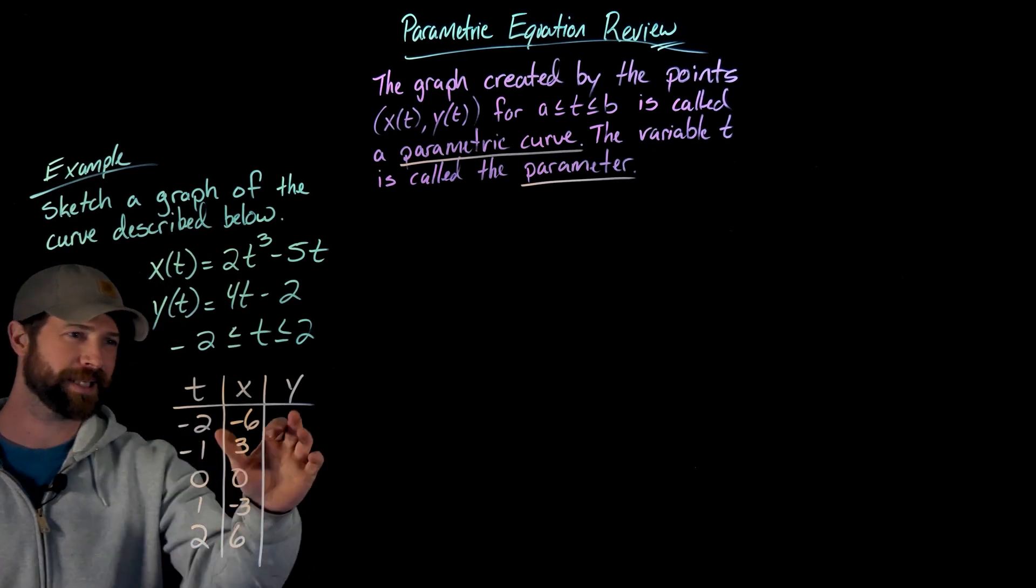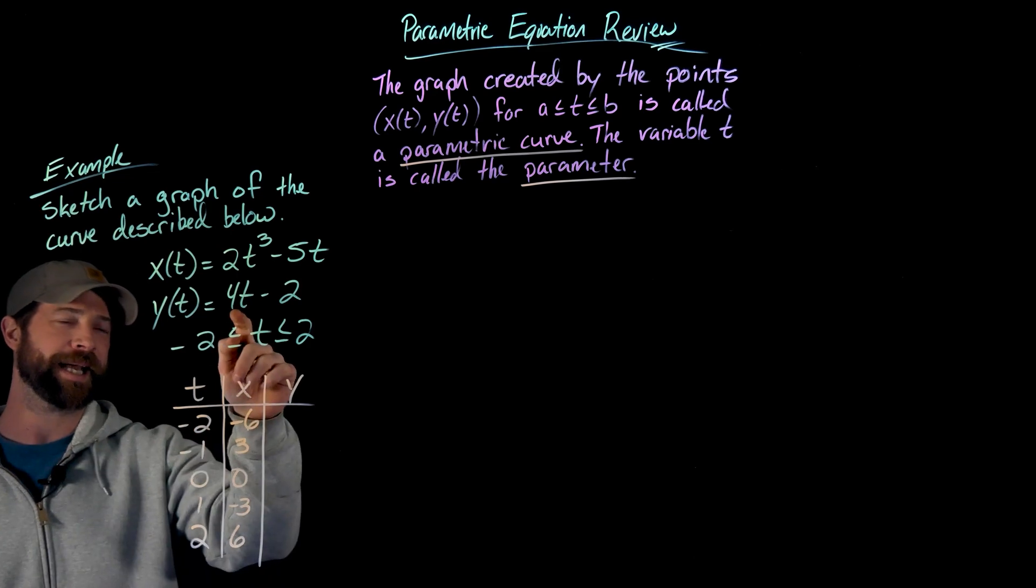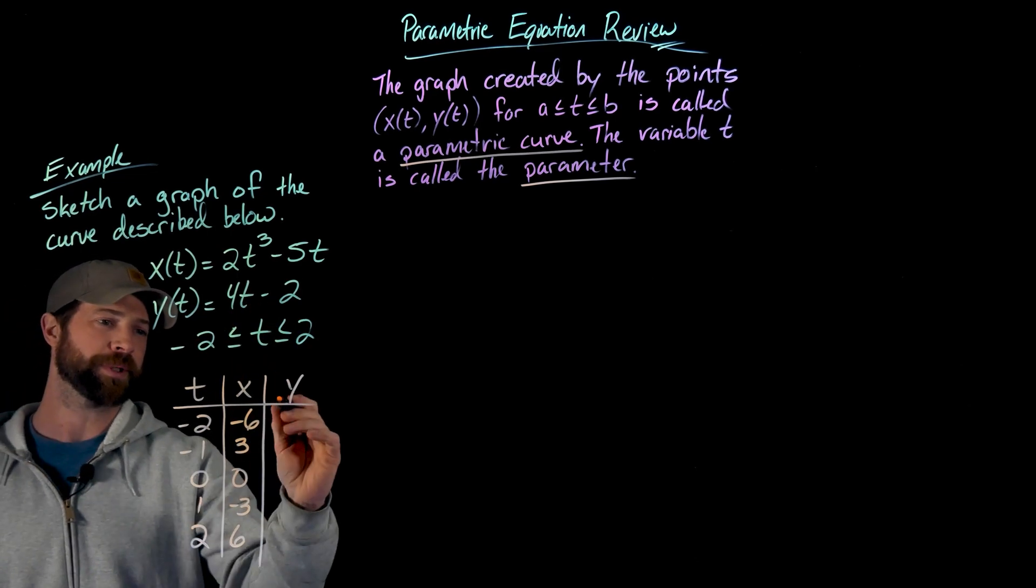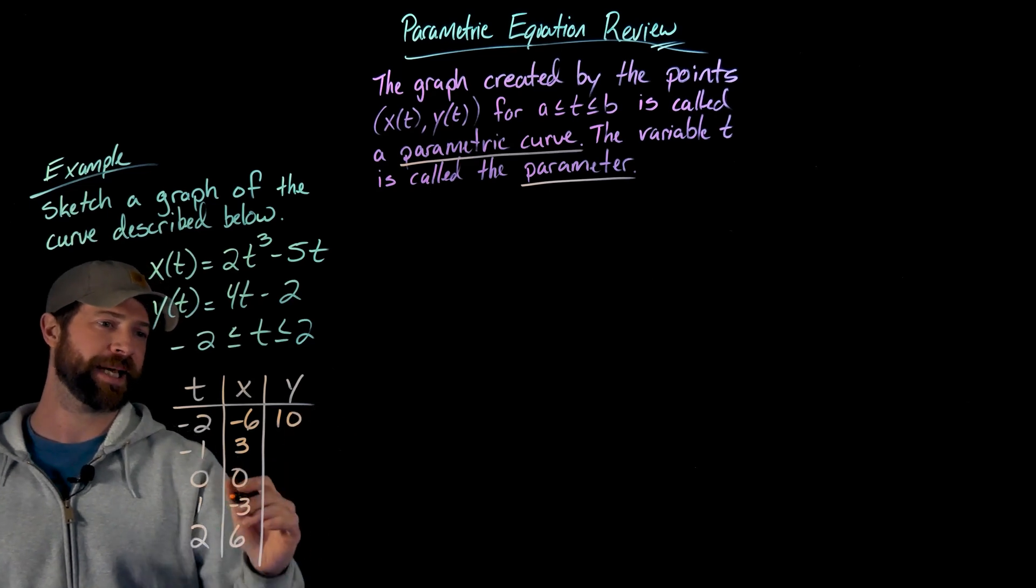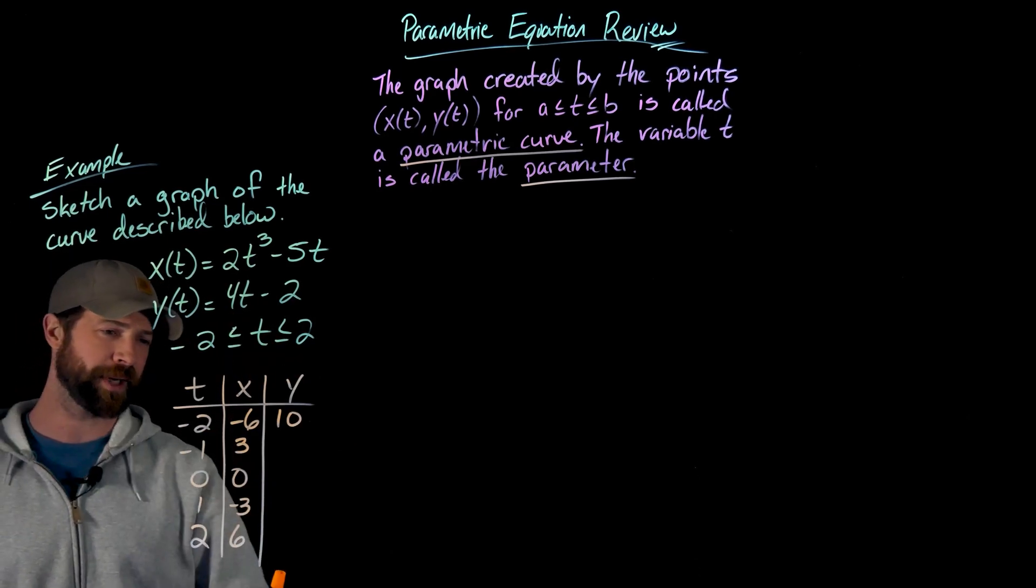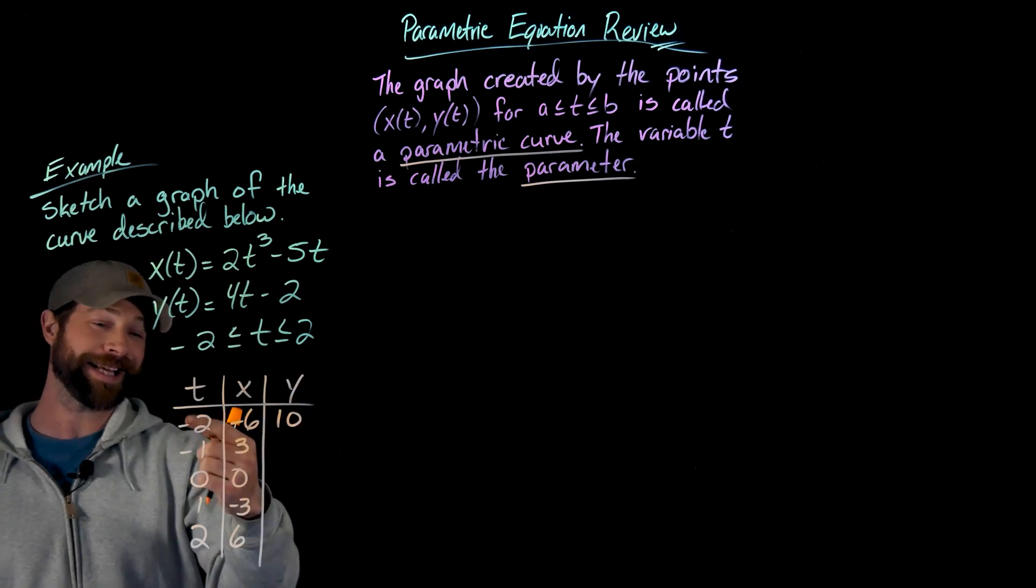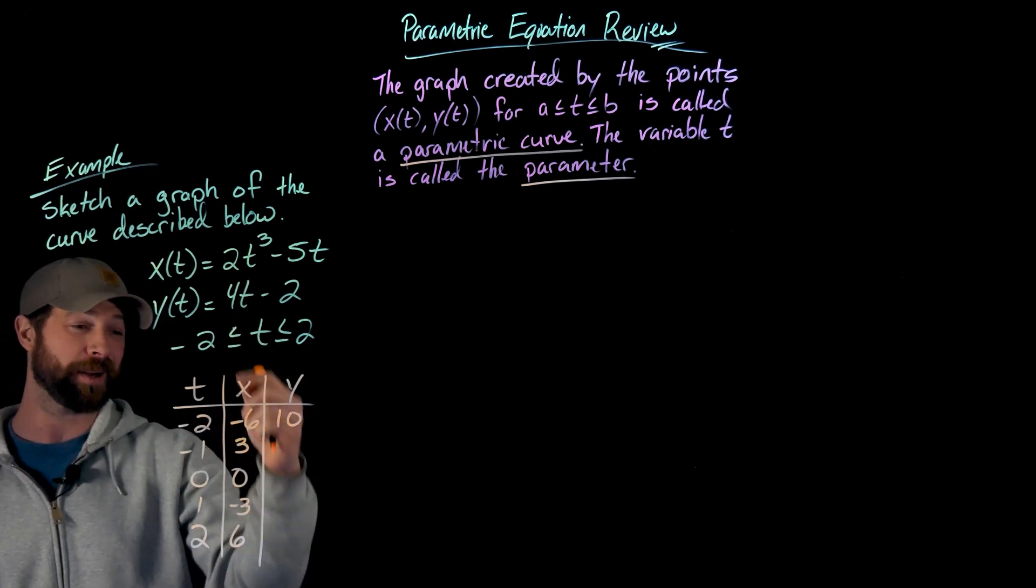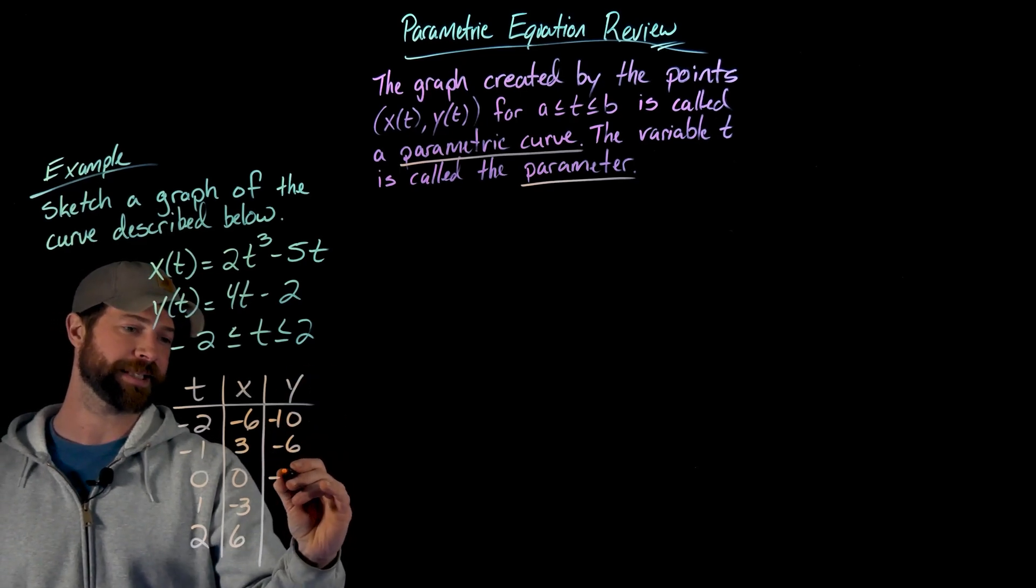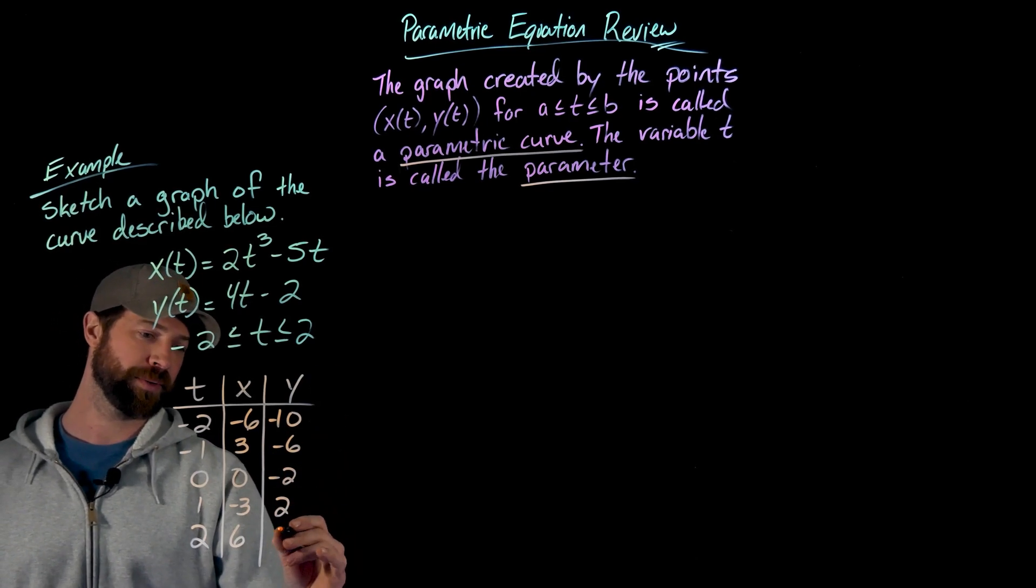Then I do exactly the same thing for my y values. Plug in negative two here. This first one would give me negative eight minus two which is negative ten. Actually in this case, since I'm going up by ones here, I can just use this slope to write the rest of these. For every integer value I increase, this goes up by four. So this is gonna be negative six, negative two, two, and six.